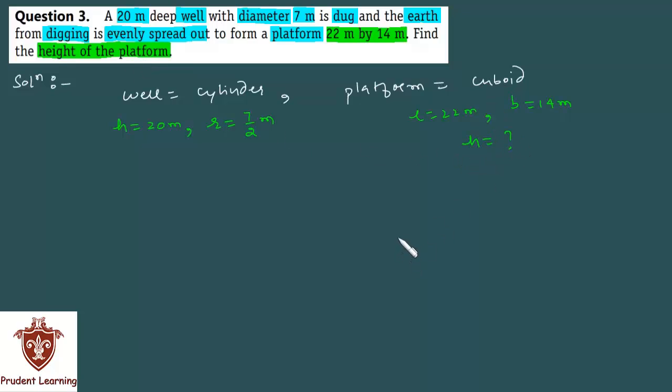That is we are supposed to find the height of the cuboid. Now since we are given that the earth obtained from digging is converted into a platform, which means volume of the earth dug must be equal to the volume of the platform.